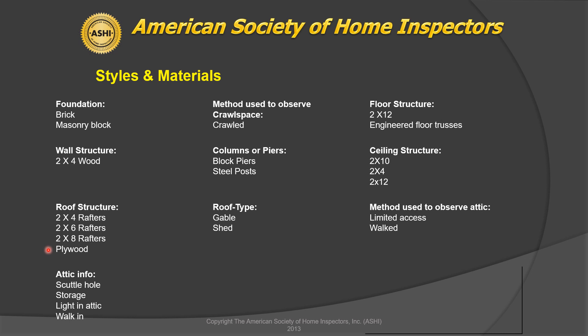Just a little note about this: this specific styles and materials list was taken from an older home. So it had a crawl space and had plywood — usually you see OSB today. And notice it doesn't say anything about engineered wood trusses; it should say stick built in here because it was mostly stick built.